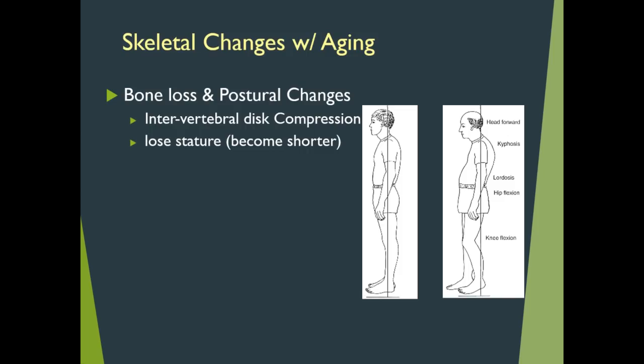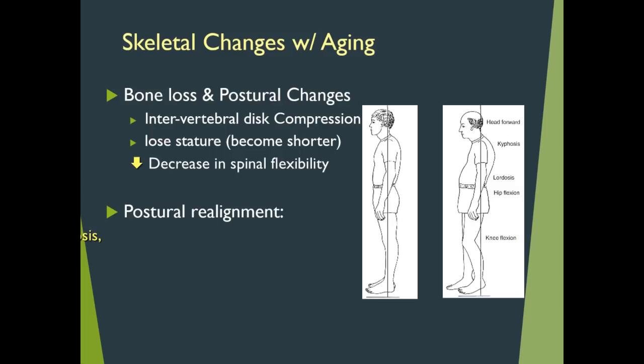This happens on a micro scale daily — we are literally taller in the morning than in the evening. Stretch that time frame through 60, 65, 70, 80 years and you understand how much weight bearing has taken its toll. If you have less mobility of those discs, what is compromised is spinal flexibility. Regarding postural realignment, one previously discussed condition is kyphosis, and the other is lordosis.